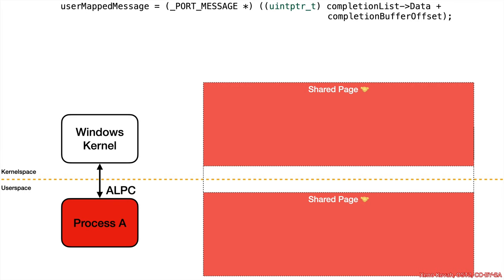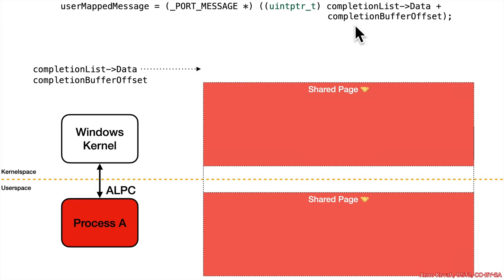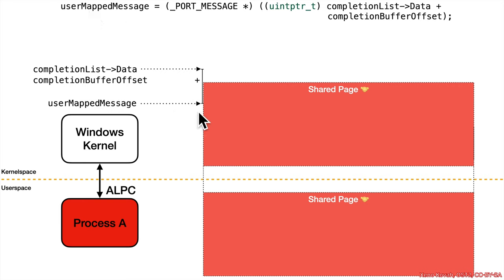As an extra hint, here's how to think about what's going on in this code: we have completion list data pointing somewhere outside of the shared page. Then, a completion buffer offset is added, and you get the user mapped message, which points somewhere inside the shared page. This is how you should visualize the situation once you read the rest of the code.